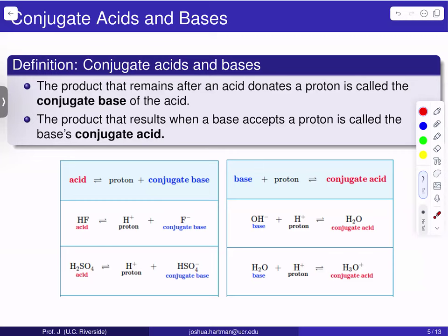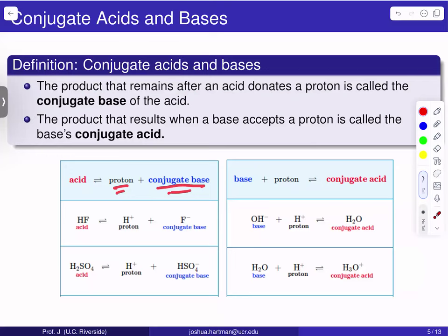With those definitions down, we're now ready to move on to conjugate acids and bases. The product that remains after an acid donates a proton is called the conjugate base of that acid. We start off with some acid, a proton comes off, and whatever's left over is the conjugate base. So if it's HF, hydrofluoric acid — you give off a proton, the conjugate base is F⁻. If you have sulfuric acid, H₂SO₄ gives off a proton, and the conjugate base is HSO₄⁻.